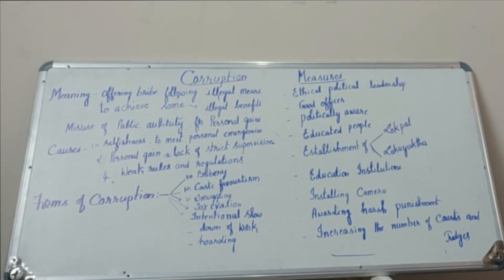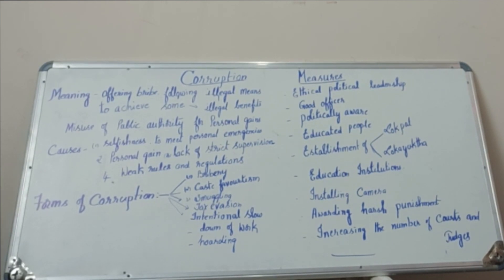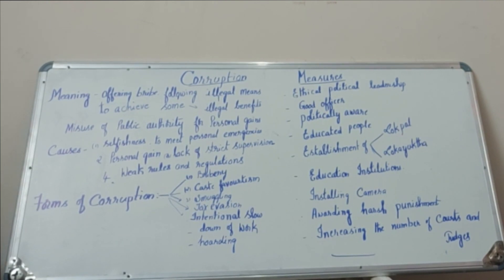Today's next topic is corruption. What do you mean by corruption? We all know the meaning — bribery, following illegal means to achieve illegal benefits, or misuse of public authority for personal gains. What are the causes for corruption? Selfishness — people are becoming caste-conscious and region-conscious in providing jobs, etc. To meet personal emergencies and get personal gain. There are also no strict rules and regulations to check corruption, so people are taking bribes in order to get things done.